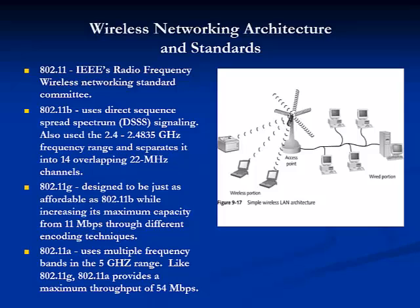Wireless LANs use the same protocols and a similar architecture as wire-bound LANs. Each wireless node uses a transceiver and antenna, included in the NIC, to communicate with an access point. The access point manages data communications with multiple mobile wireless LAN nodes, or between multiple wireless LANs. For optimal transmission, the number of nodes served by one access point should remain under 100, while the maximum distance between a mobile node and its access point should not exceed 300 feet.